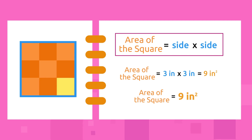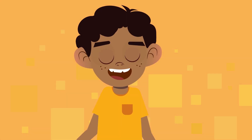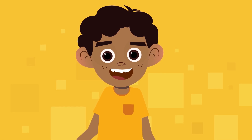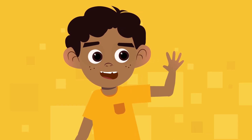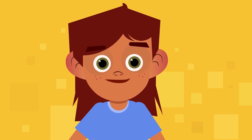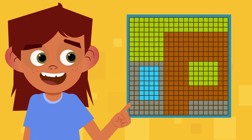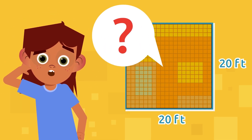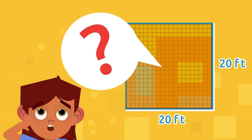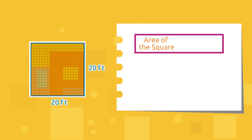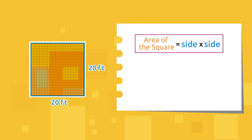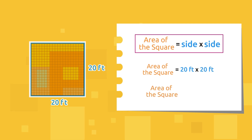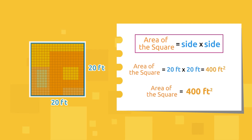It is very important to know how to find the area of a square. Let's look at some examples. Patricia is going to build a house on a square lot. If each side measures 20 feet, how big would the total surface area of Patricia's house be? To find out, we need to calculate the area of this square. Remember that we multiply one side by the other: 20 times 20 equals 400.